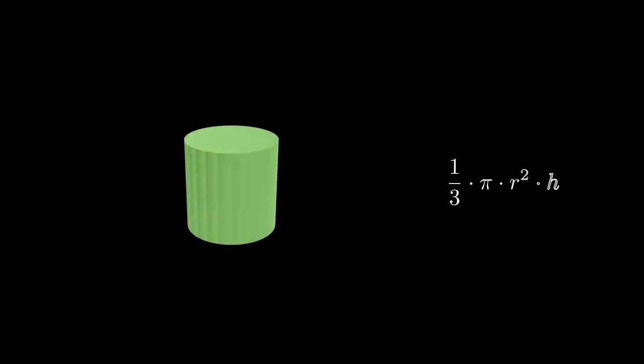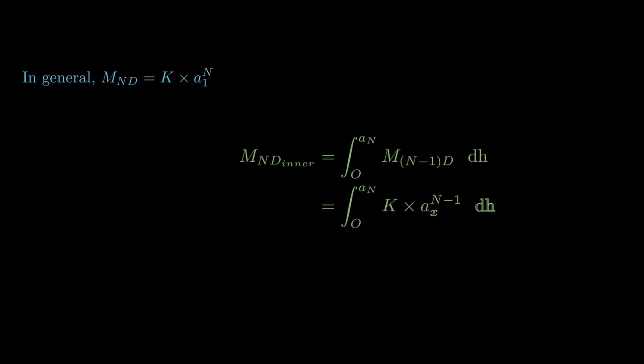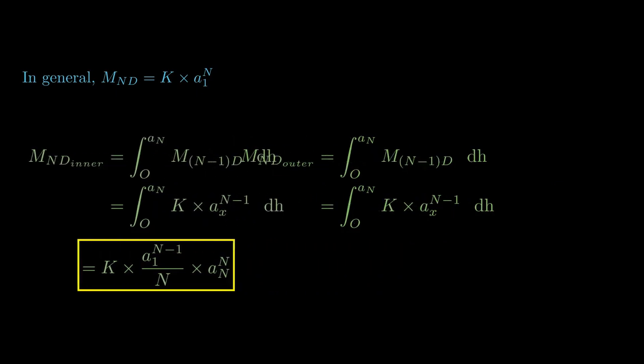The volume of a cylinder can be expressed as a product of three variables a1, a2, and a3. And in general, the measure of an N-dimensional shape can be expressed as k times a1 to the power N. And using what we just did earlier but in a more general sense, it can be proven that the relationship holds true for any dimension.